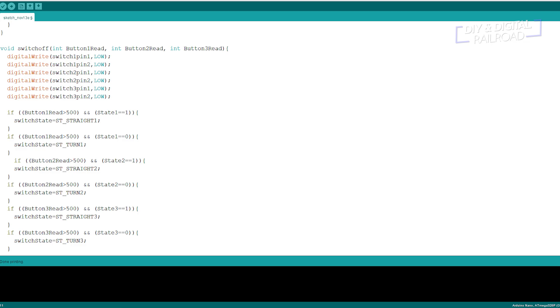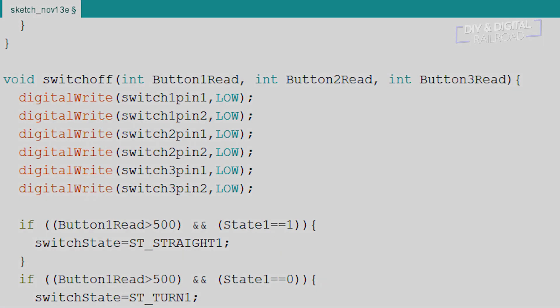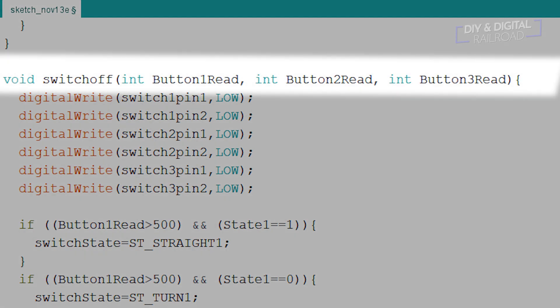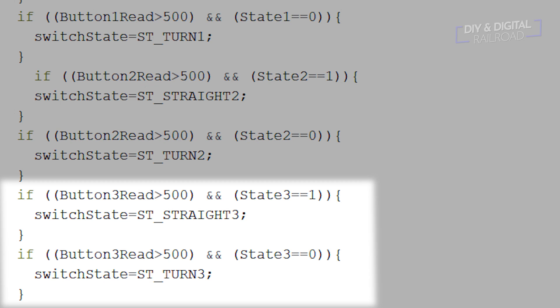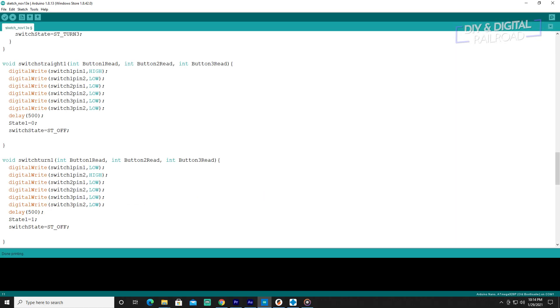Now for switch off in the integers parentheses at the top you'll need to add int button3read. You'll also need to add two digitalWrite lines: digitalWrite switch3pin1 LOW and digitalWrite switch3pin2 LOW. In our if-then statements you'll need to add if button3read is greater than 500 and state3 is equal to 1, switchState = ST_STRAIGHT3. Then you'll need to add another if-then statement: if button3read is greater than 500 and state3 equals 0, switchState = ST_TURN3.